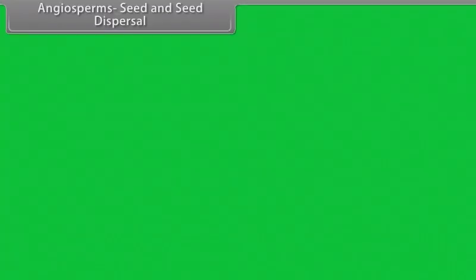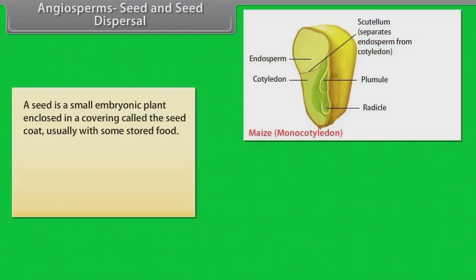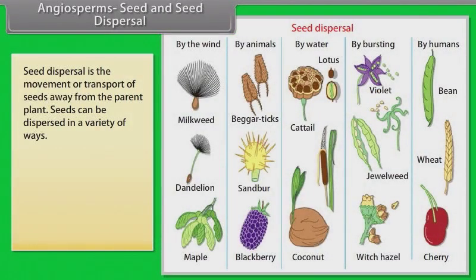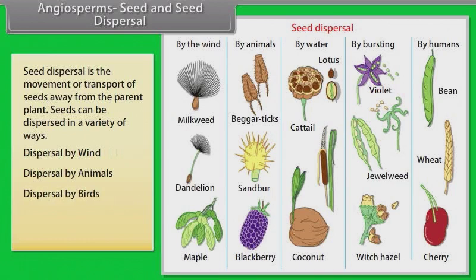Angiosperms Seed and Seed Dispersal: A seed is a small embryonic plant enclosed in a covering called seed coat, usually with some stored food. It is the product of the ripened ovule of gymnosperm and angiosperm plants which occurs after fertilization and some growth within the mother plant. Seed dispersal is the movement or transport of seeds away from the parent plant. Seeds can be dispersed in a variety of ways: dispersal by wind, dispersal by animals, dispersal by water, and dispersal by humans.